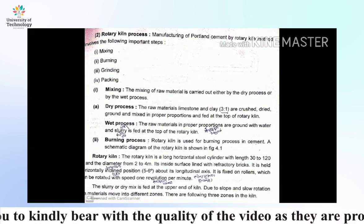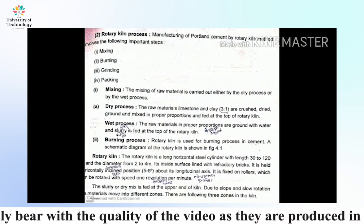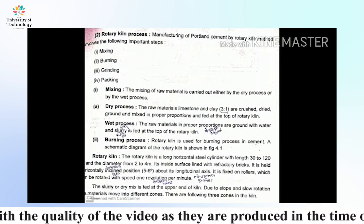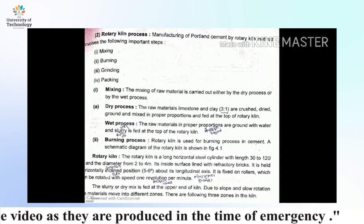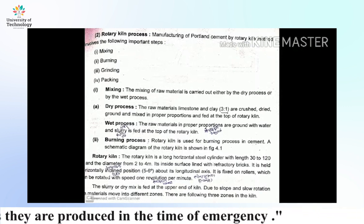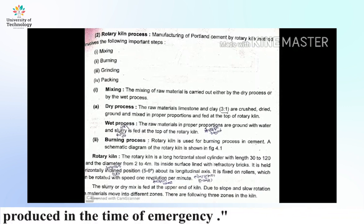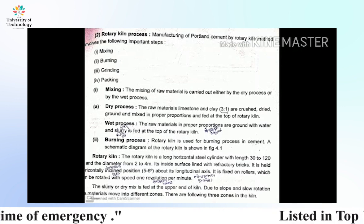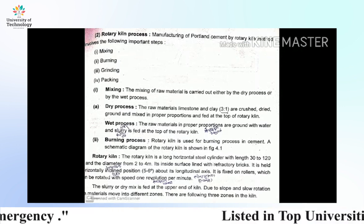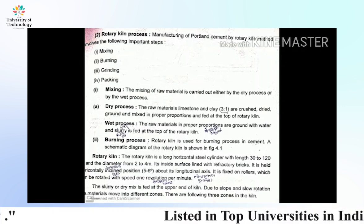Manufacturing of Portland cement by the rotary kiln method involves the following important steps: first, mixing; second, burning; third, grinding; fourth, packing.